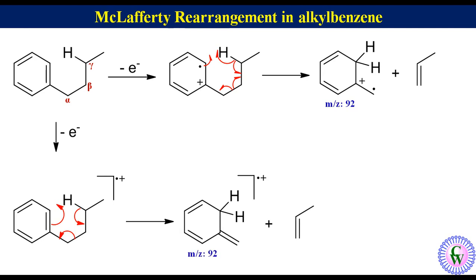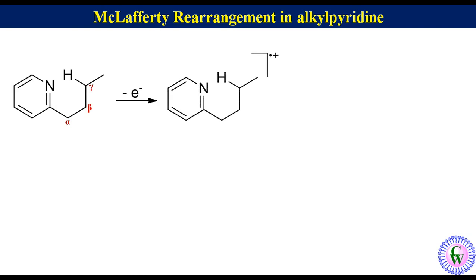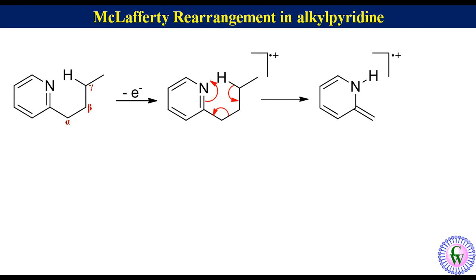Similarly, in 2-butylpyridine, removal of one electron gives a parent radical cation which undergoes McLafferty fragmentation to produce a McLafferty fragment with m/z value of 93 and a propene molecule.